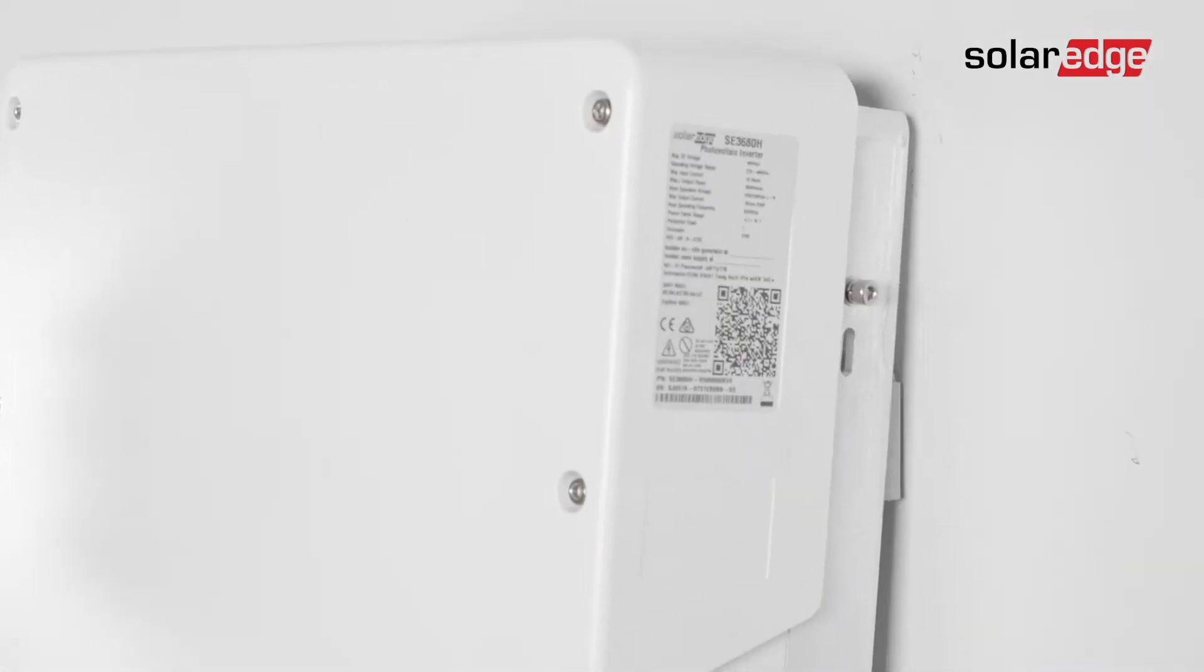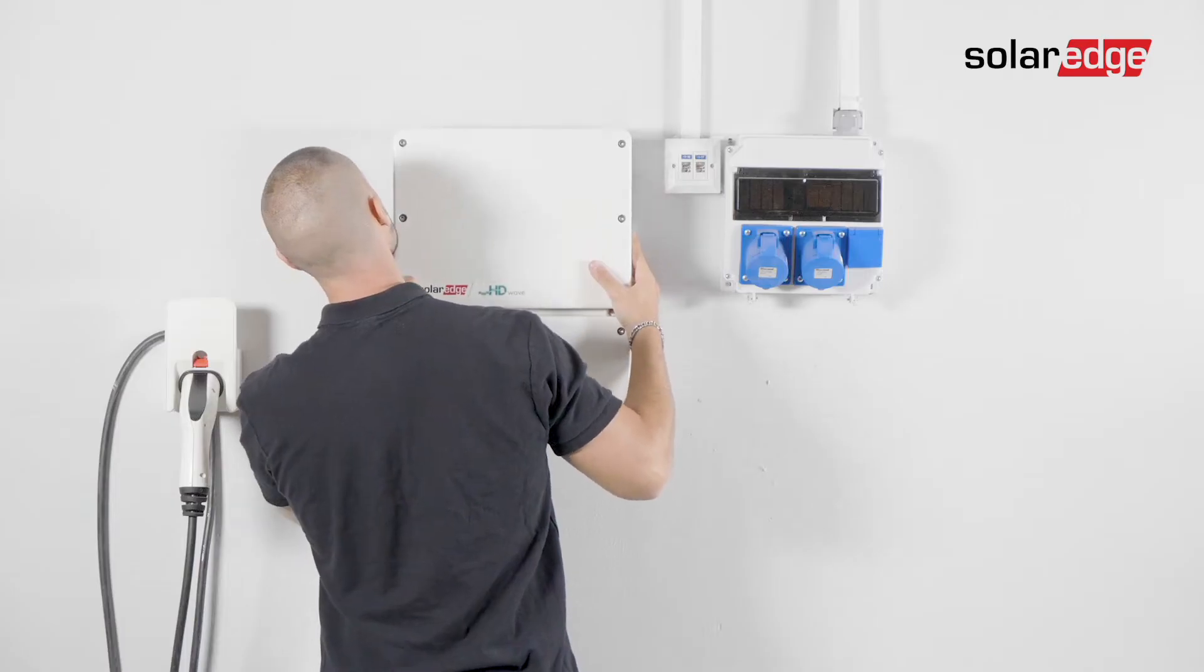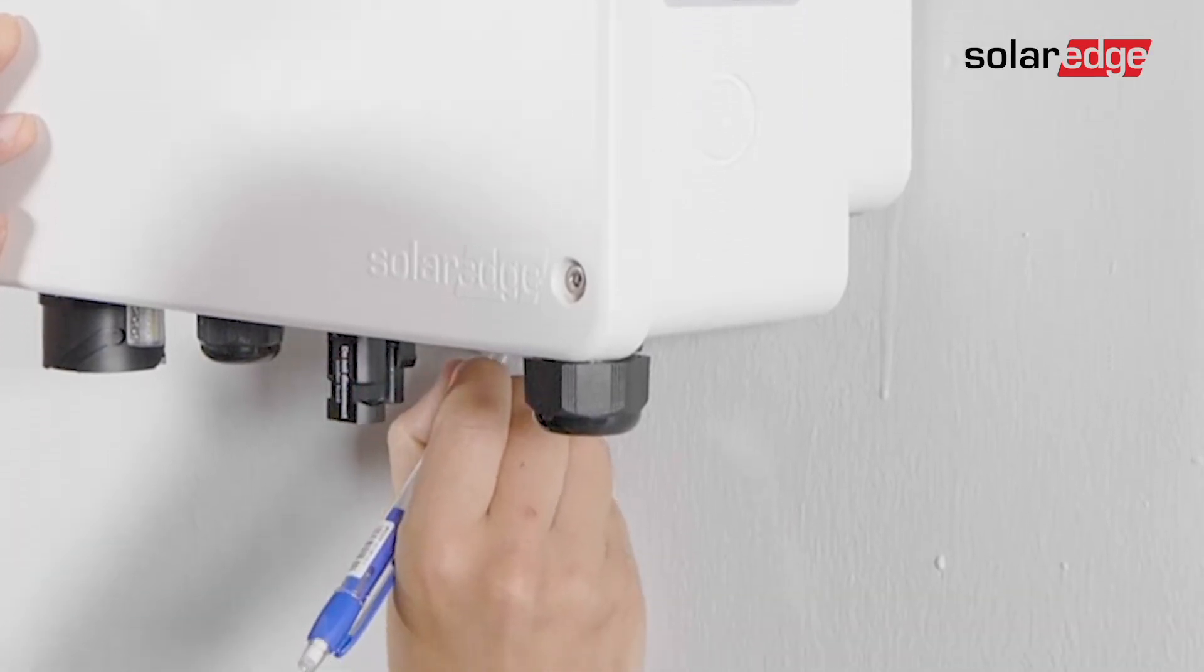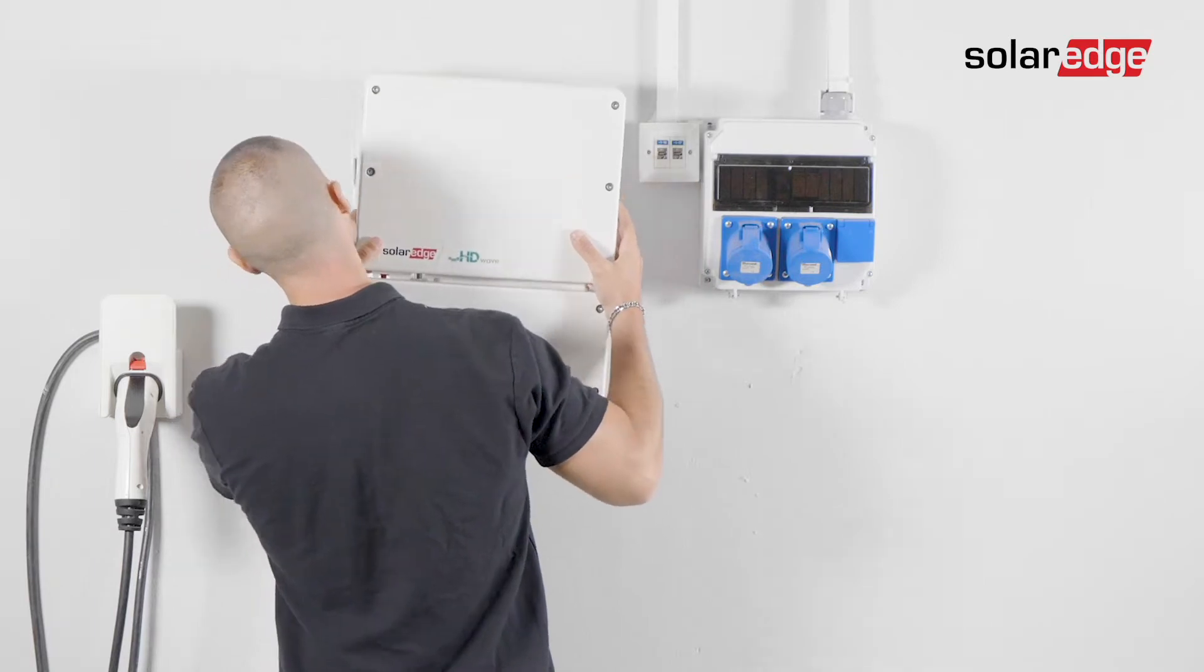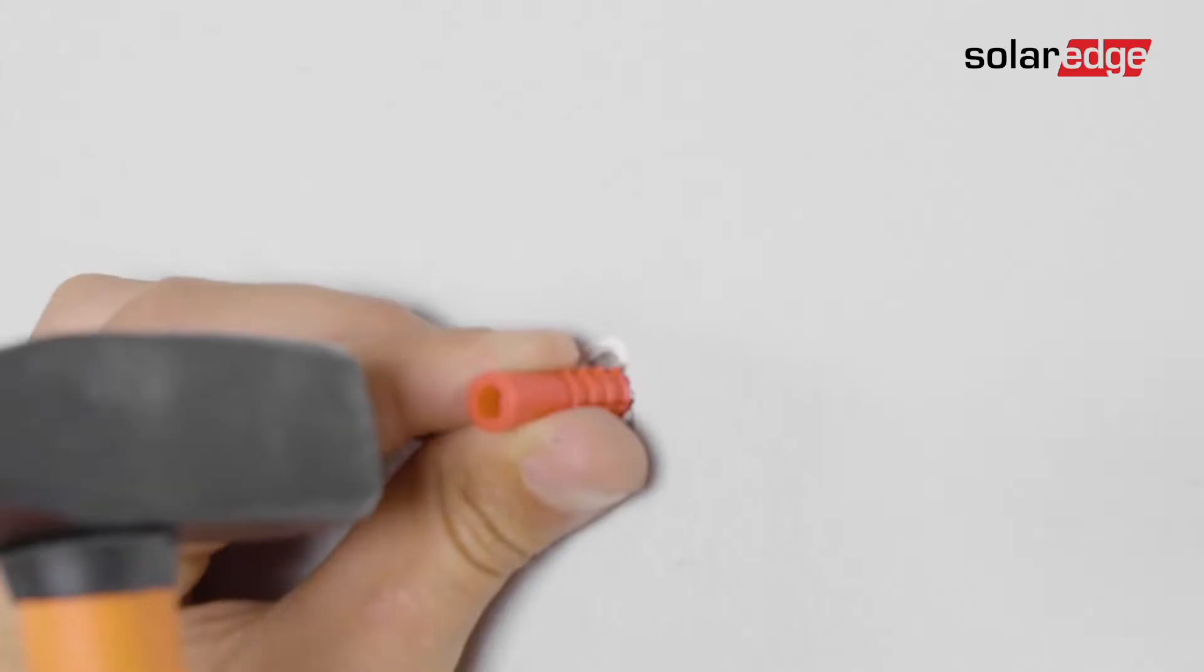Hang the inverter on the bracket. Mark the location of the connection unit bracket and remove the inverter. Then drill the hole and insert the bolt.